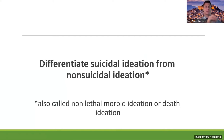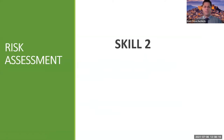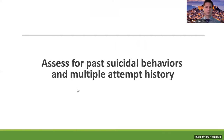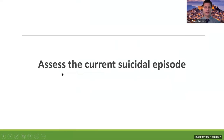Skill two is asking about a prior history of suicide attempts or suicidal behaviors. Remember that two or more prior attempts means the person is considered a multiple attempter, which places them at a chronically moderate level of risk for life, according to the research.